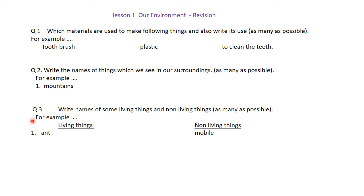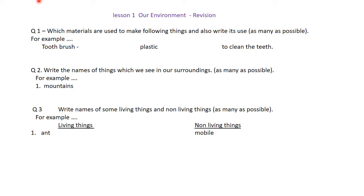Next question: write the names of some living things and some non-living things. Here, ant is given in the living things category and mobile in the non-living things category. You will make a long list which includes some living things and some non-living things.